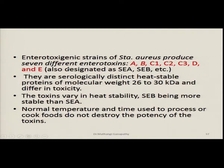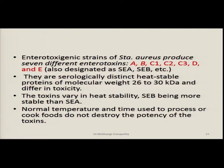The enterotoxigenic strains of Staphylococcus aureus produce 7 different enterotoxins called SEA, SEB, SEC1, SEC2, SEC3, SED and SEE — standing for Staphylococcal enterotoxin A, B, and so on. Each differs from the other in toxicity. They are serologically distinct and heat stable, with molecular weights ranging from 26 to 30 kilodaltons. SEB is more heat stable than SEA. Normal cooking temperature and cooking time does not destroy the potency of the enterotoxin.